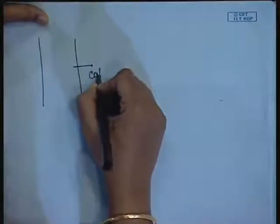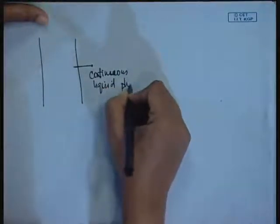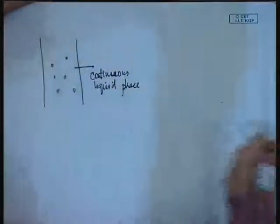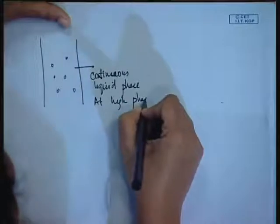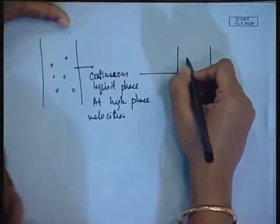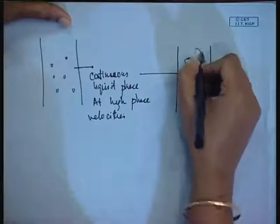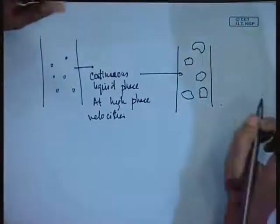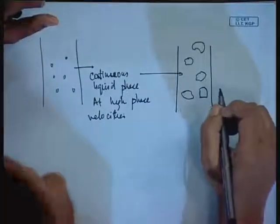Let us take up the bubbly flow pattern. For the bubbly flow pattern, what have we observed? It basically has a continuous liquid phase with bubbles dispersed in it. This is the ideal case where very small bubbles are dispersed; this occurs at high mixture velocity. Otherwise, we usually find that we have a liquid phase where bubbles of different sizes and shapes are dispersed.